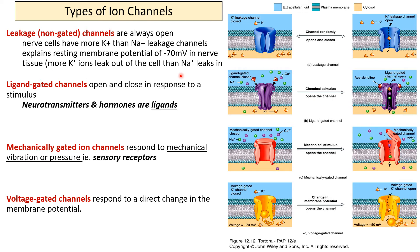There are four types of ion channels embedded in the neuron's cell membrane. The first type is leakage or non-gated channels — channels that have no gate and are always open, allowing sodium and potassium to move across the cell membrane. There is relatively more potassium than sodium leaking across the membrane, contributing to the resting membrane potential. These are the only channels functioning when the cell is at rest.